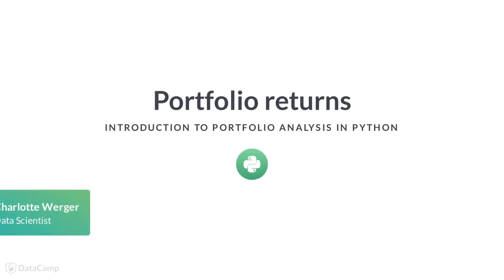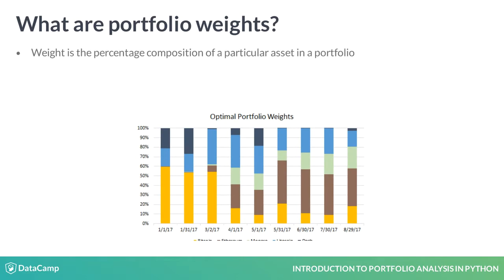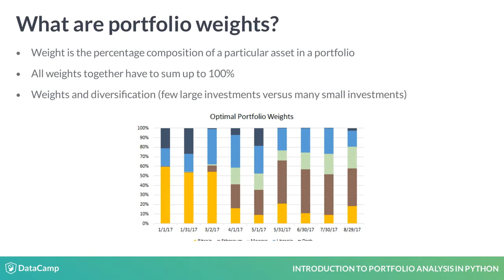Let's discuss portfolio weights and returns. The portfolio weight of an asset in your portfolio is the percentage of the total value invested in that particular asset. The portfolio weights summed together add up to 100%. By setting many relatively small weights, you can diversify your portfolio.